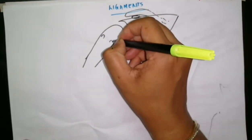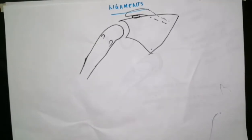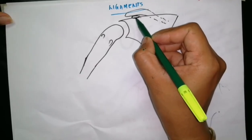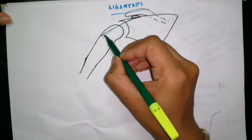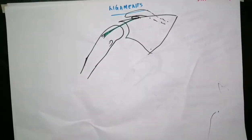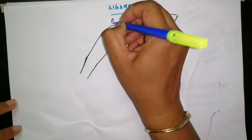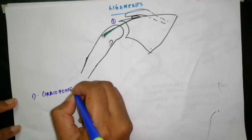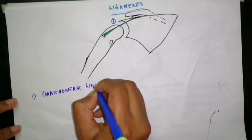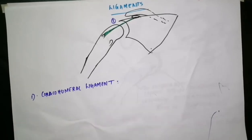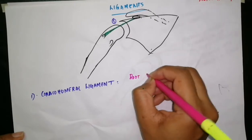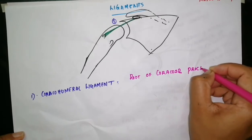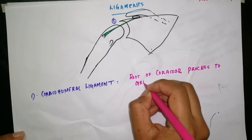This is the greater tubercle and this is the lesser tubercle. There is a ligament arising from the root of the coracoid process which gets inserted into the greater tubercle of humerus. This ligament is called the coracohumeral ligament. The coracohumeral ligament extends from the root of the coracoid process to the greater tubercle of humerus.